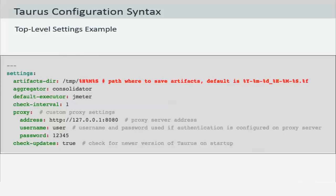Here is an example of how you can write and modify the top-level settings. We're changing the artifacts directory from the default to a different location — the default is generally the directory within which the scripts are being executed. The aggregator has been set to console, which is actually the default setting. The default executor is set to JMeter, and here is your proxy setting, which will be consumed by any requests initiated within your script. You also have an option called check updates that allows you to check for updates for Taurus before executing any of these scripts.